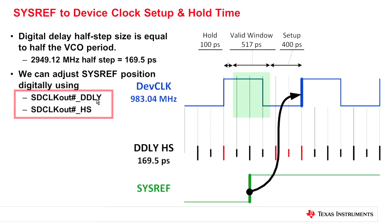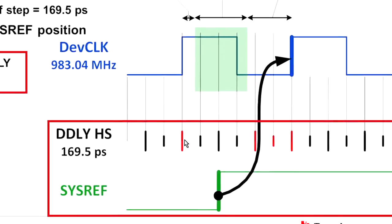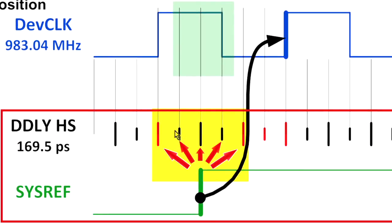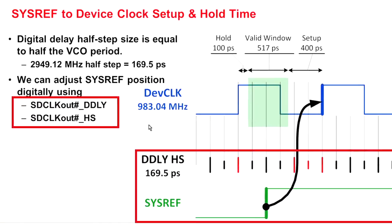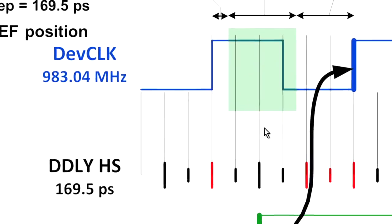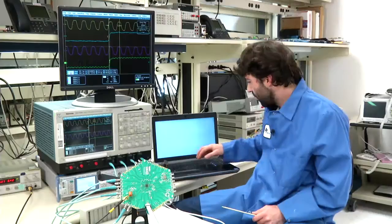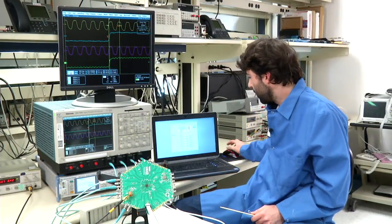So by using these two registers, the digital delay, which is a full cycle step, and the half step bit, which is a half cycle step, I'm able to tune the sysref to be at any one of these positions. What we'll do is find out what digital delay and what half step setting give us the best margin to the edge of this valid window. So let's go to code loader and look at the oscilloscope.